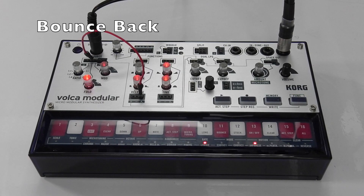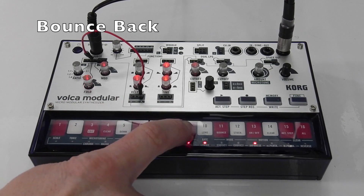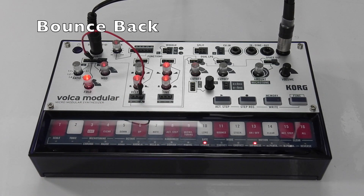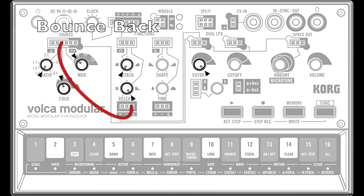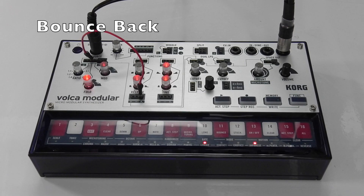Bounce Back. This is another easy one. When a key is released, the Function 1 end trigger sends a high level signal to the fold amount, which causes the fold level to jump up as you release the key. You can play this live on the keyboard, or if you're going to play it using the sequencer it's best to have the long gate settings turned on.